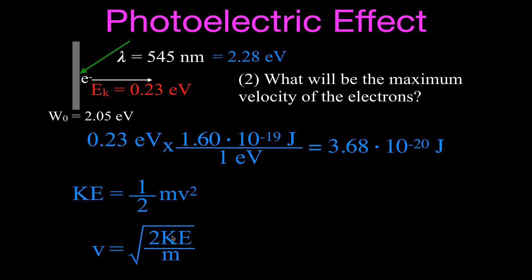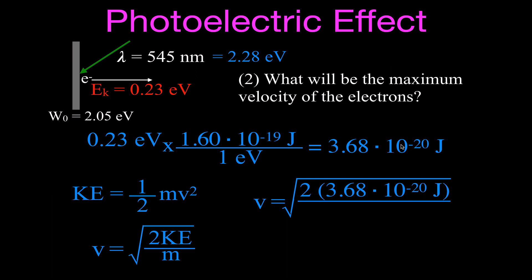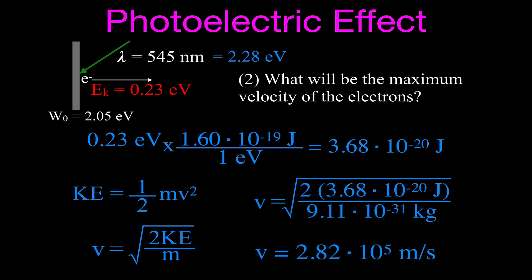We solve the equation for velocity: multiply both sides by 2, divide both sides by m, then take the square root, giving v equals the square root of (2 times kinetic energy divided by mass). Plugging in 2 times 3.68×10⁻²⁰ joules divided by the electron mass of 9.11×10⁻³¹ kilograms, the maximum velocity of the electrons is 2.82×10⁵ meters per second.